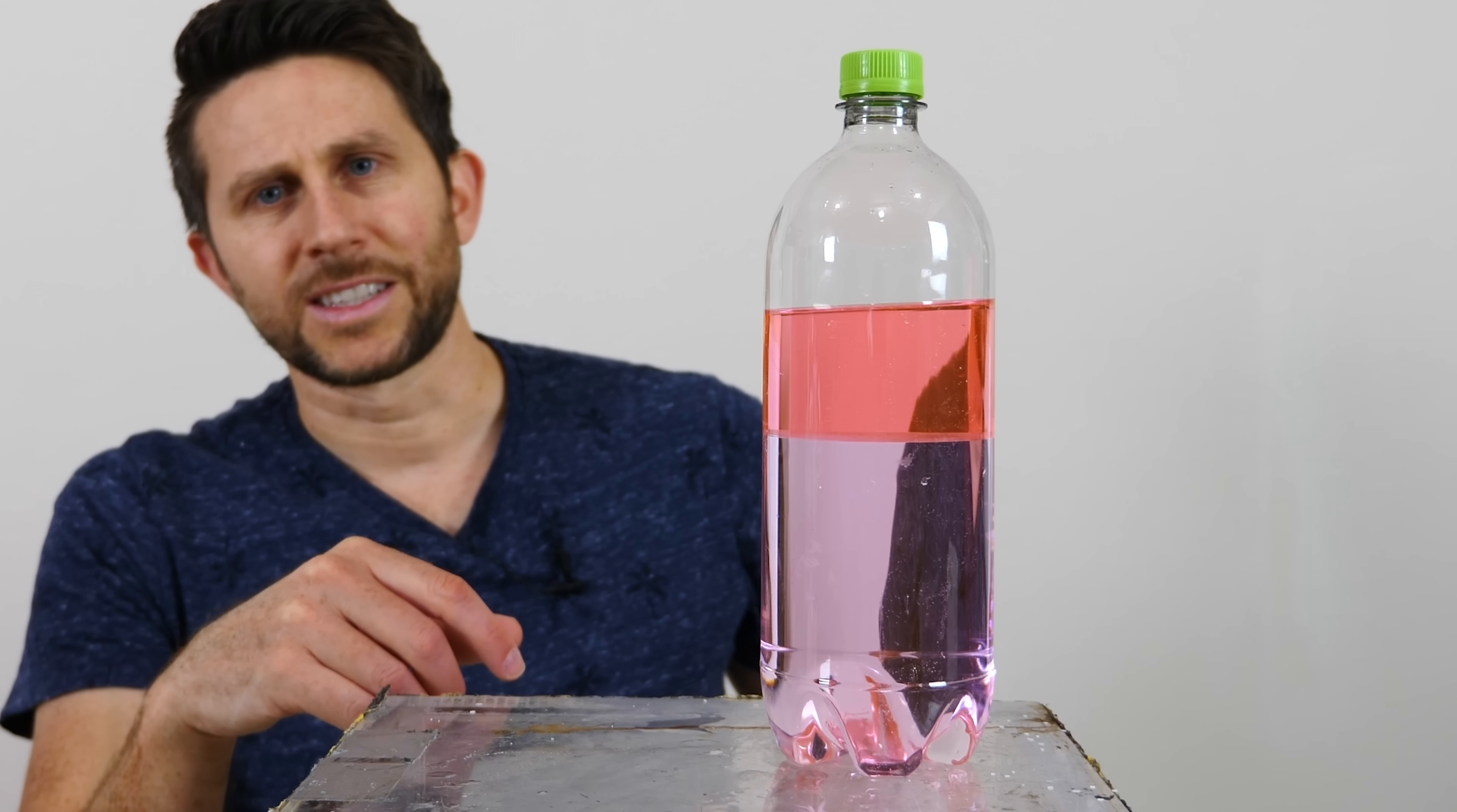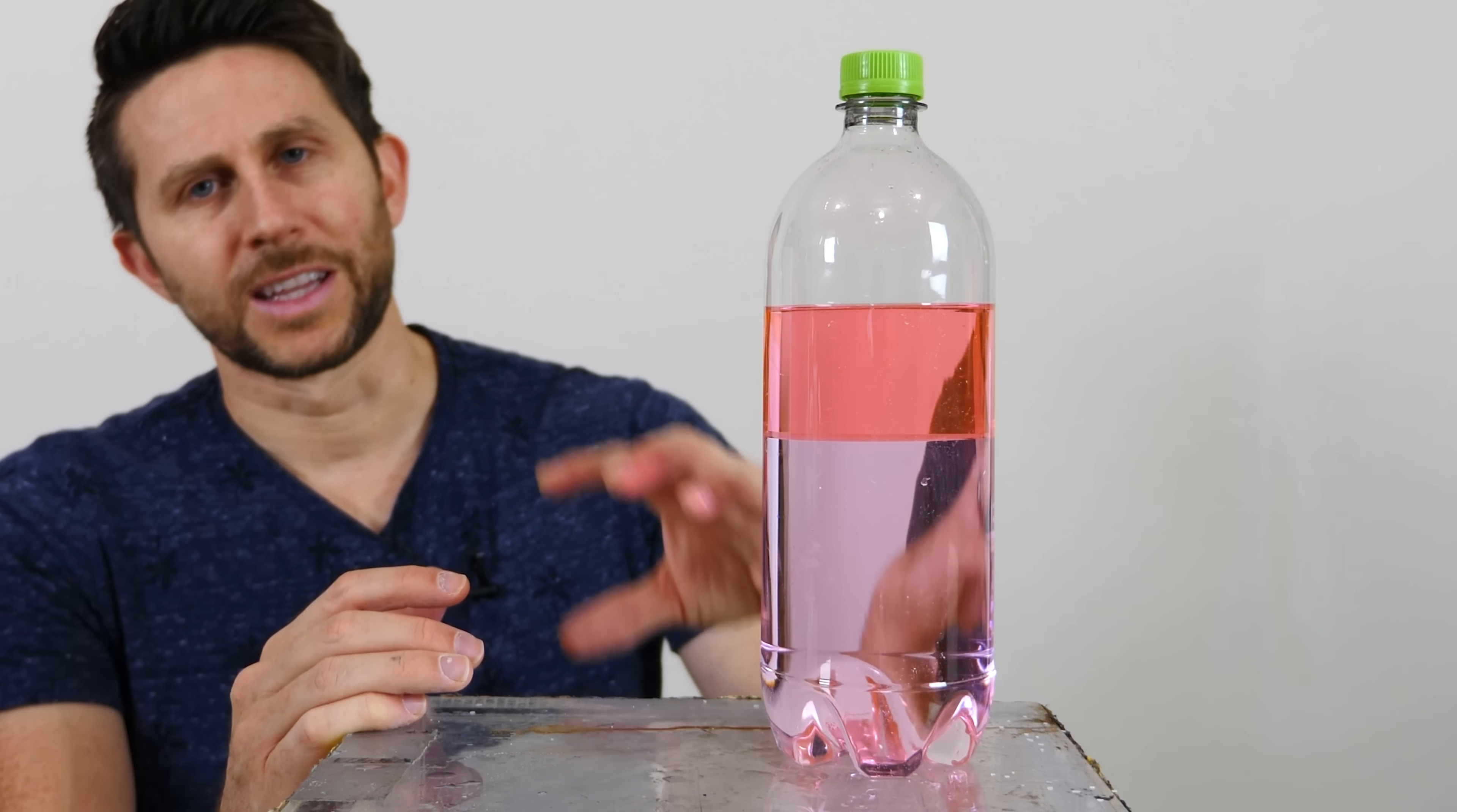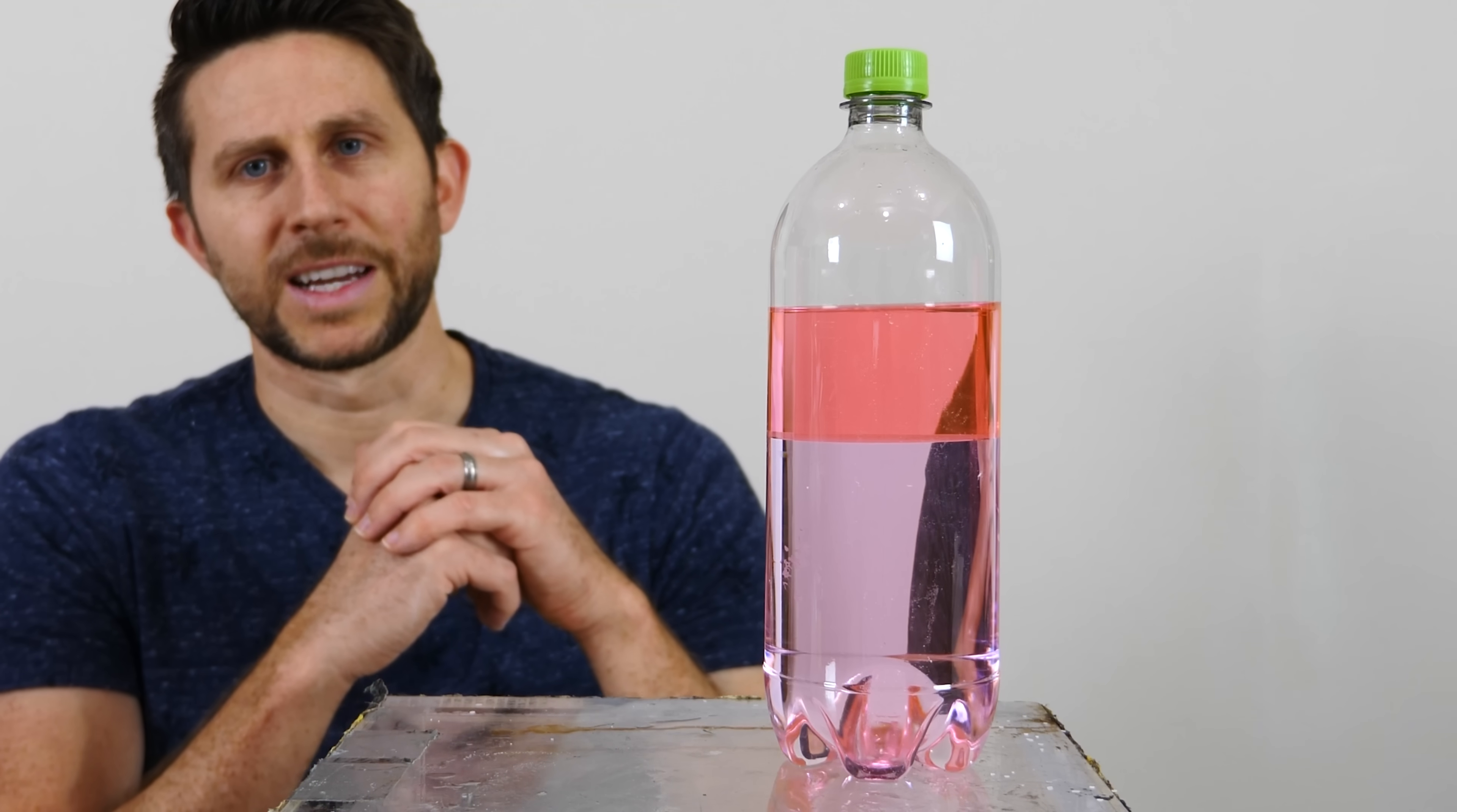Or it can separate out into two phases like this. And when it separates out into two phases, it's not like one is completely alcohol and the other is completely water. But what it is, is one of them will have more of one molecule than the other one. So this phase has more alcohol than water, and this one has more water than alcohol. And the state that takes the least energy for the molecules is for them to separate into two liquid phases.